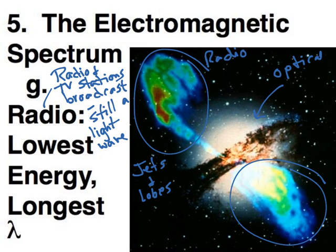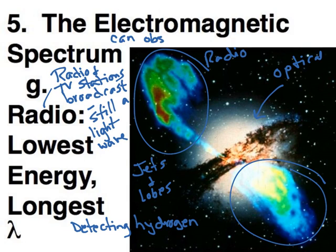Radio is also good for detecting hydrogen. Hydrogen gives off radio waves, especially when it's in very large clouds. So we use radio telescopes to pick up radio waves. These we can do from ground. You see very large radio dishes on the ground, because our atmosphere is relatively transparent to radio waves.